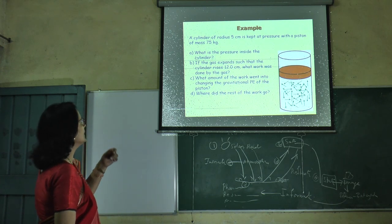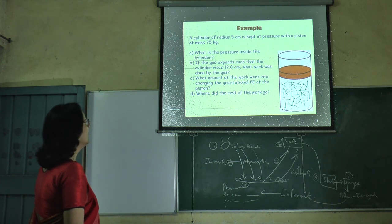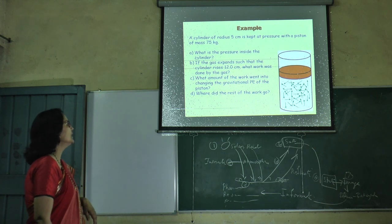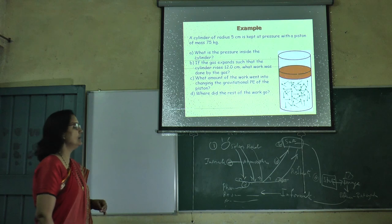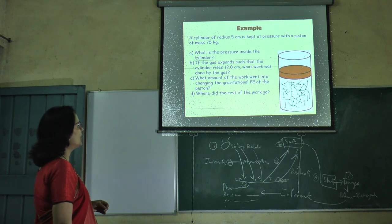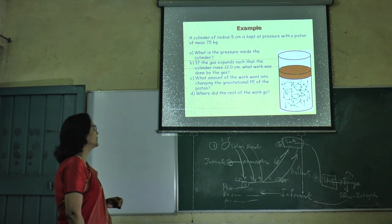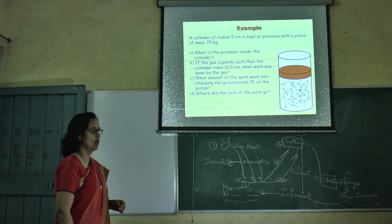Here we see different types of examples. First, what is pressure inside the cylinder? We know by thermodynamics. Second, what amount of the work went into changing the gravitational position of the piston? And third, where did the rest of the work go?